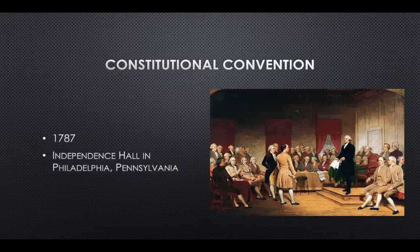At the convention, the representatives did not agree on the structure of their new government. Some believed it would be best to have one strong central government with most of the power over all the states. Others felt it would be better to give the individual states more control. In the end, the representatives decided on a federal system in which power is shared between the states and the central government. The U.S. Constitution was ratified in 1788.